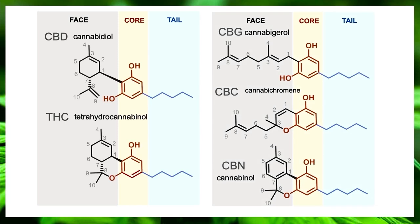Three additional pretty predominant chemical scaffolds in the space are CBG, CBC, and CBN. As you can see, the core is also the same, the tail is also the same — the only thing that changes is the face.